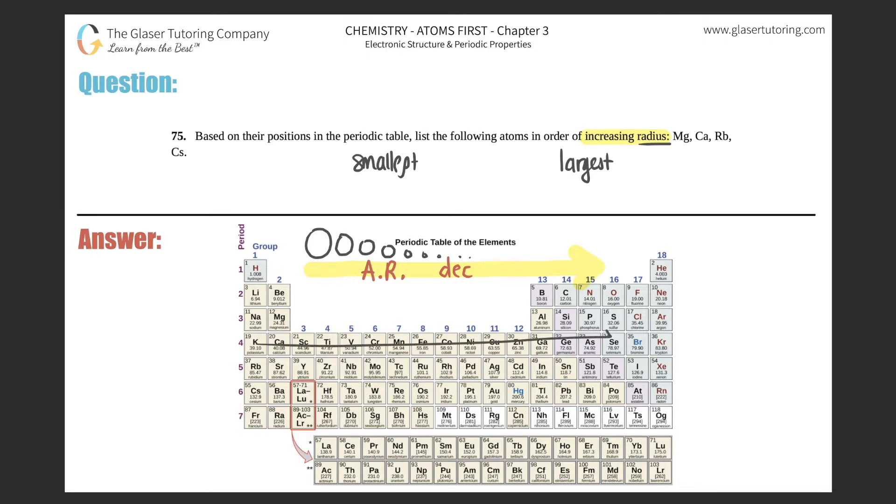So if I choose sodium, sodium would have such a big radius as opposed to its counterpart argon, which is all the way on the other side.